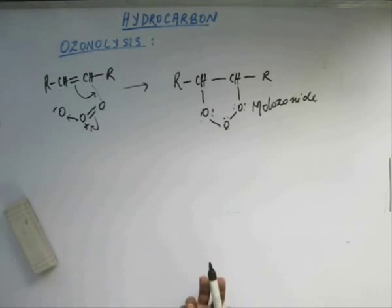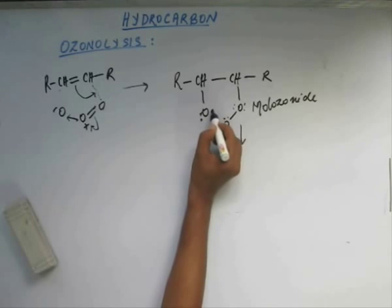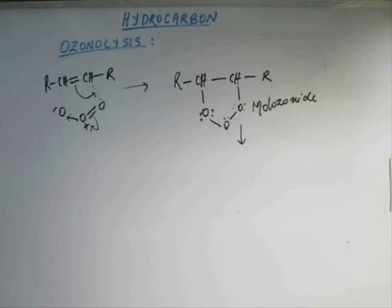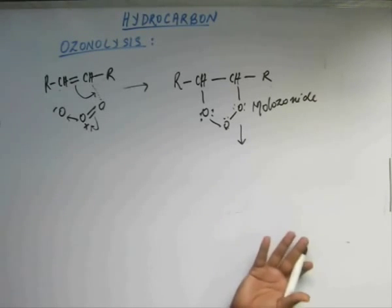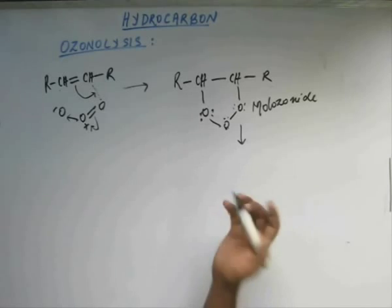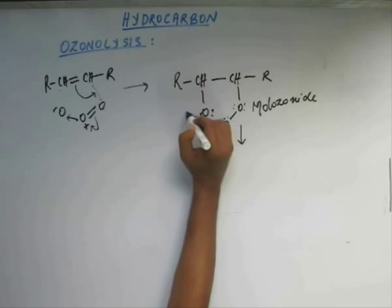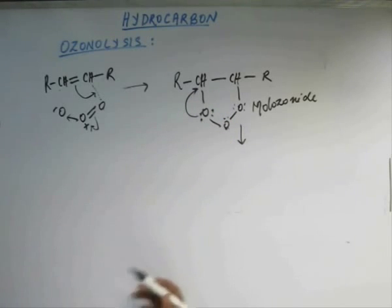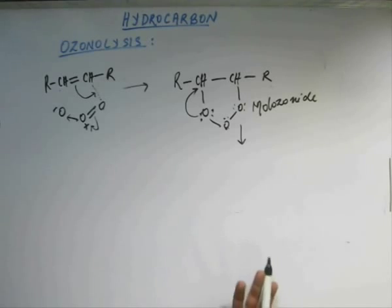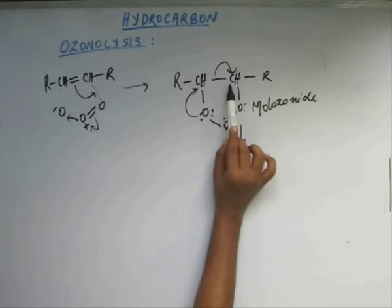This cannot exist as it is, so there is a rearrangement. Rearrangement will be a reaction — reaction starts when there is electronic exchange, so someone has to give electrons. Oxygen is the only atom having a lone pair, so it will give electrons. Not to this oxygen — it already has a lone pair — but to this carbon. However, this carbon cannot accept more electrons because it already has four bonds, so it has to break some bond. The electrons of this bond will go into the orbital of this carbon.